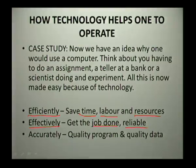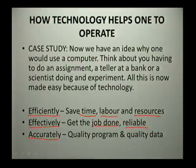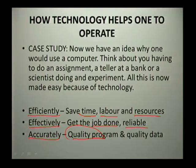The second point is effectiveness — when we work effectively, the job gets done right. We know that this computer is reliable when it's in good condition, and we are able to achieve the purpose. The third point is accuracy — when we use technology or a computer, it gives quality in terms of what we do. It gives quality results and quality data. You can rely on the results from this device because it has been programmed to do specific tasks.